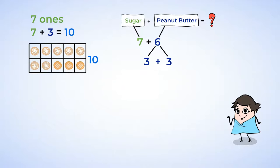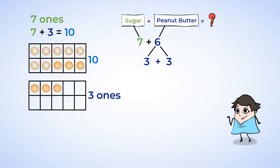What about the rest of the peanut butter cookies? Sure, you guessed it. You can put them in a 10 frame. What you have now is 3 1s. Let's combine the 1 10 and 3 1s to say that 10 plus 3 is 13.